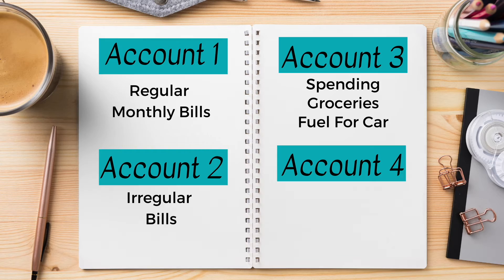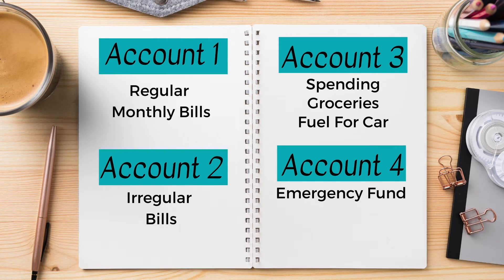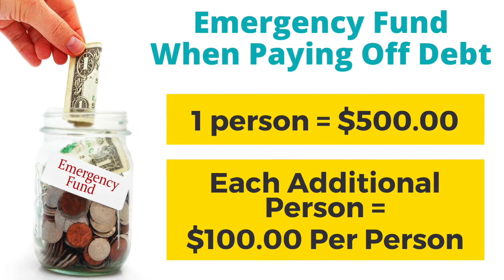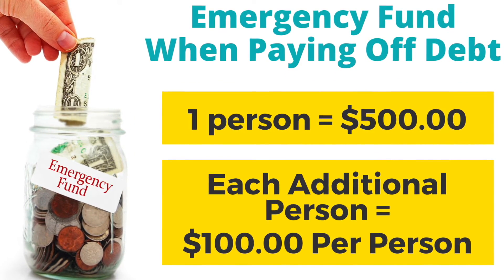The fourth account is going to be a high interest savings account. I recommend opening it at a different bank that is not connected with the three other accounts, because it makes it harder to take money from yourself. This account will have a progressive purpose. The first thing you'll use it for is to build up your emergency fund. If you have debt, I recommend $500 for the first person in the household and an extra $100 for each additional person — so a family of four would be $800.